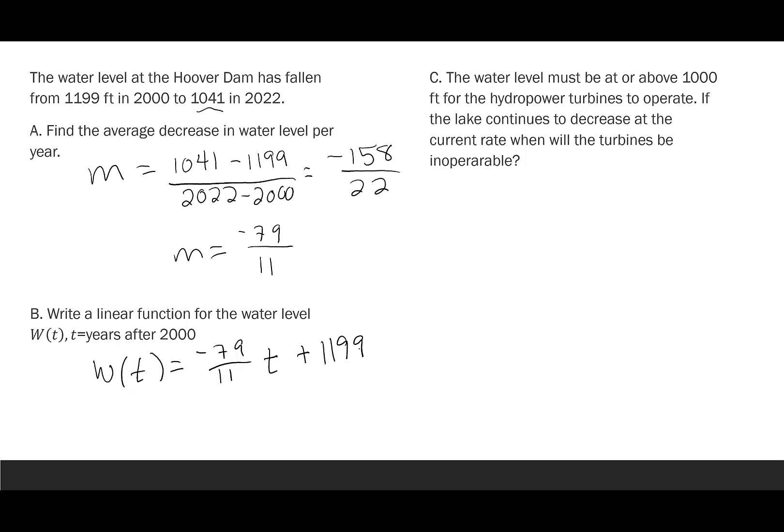So as a consequence of this change, we have this future problem that the water level must be at or above 1000 feet for the hydropower turbines to operate. If the lake continues to decrease at the current rate, when will the turbines be inoperable? So we are going to take 1000 and set it equal to negative 79 over 11 times t plus 1199. I'm going to move this 1199 over to the left, which means I'm subtracting. I get negative 199 is equal to negative 79 over 11 t, and then I'm going to multiply by the reciprocal. So I'm just going to flip the negative 79 over 11. I'm going to make it 11 over negative 79, and I do that on both sides. And at this point, I am going to go ahead and let the calculator round for me. So when I did negative 199 times 11 over negative 79, I got 27.7, and that's going to be t.